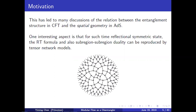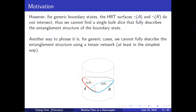The discovery of the RT formula led to many discussions of the relation between entanglement structure in CFT and spatial geometry in AdS. Since all HRT surfaces lie in the same slice, you are only probing the spatial geometry, not the time direction. An interesting aspect is that the RT formula and sub-region duality can be reproduced by tensor network models. The boundary state is defined on the boundary of the tensor network, and the RT formula is realized as the smallest cut separating two boundary regions.